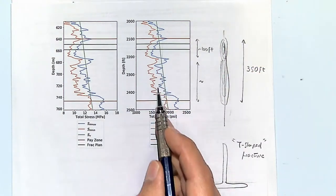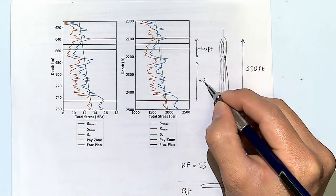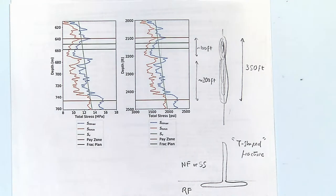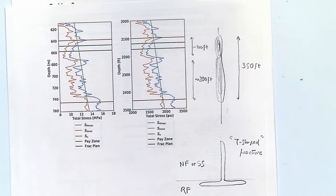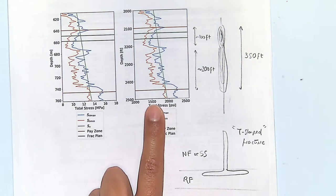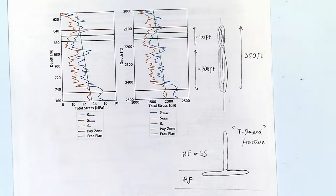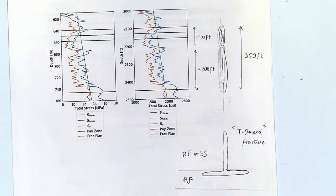If we consider just the lower section it's about 200 feet. There's no simple single answer — this is subject to interpretation. But you need to recognize those stress boundaries and when stress regimes change from normal faulting to strike-slip or from strike-slip to reverse faulting.